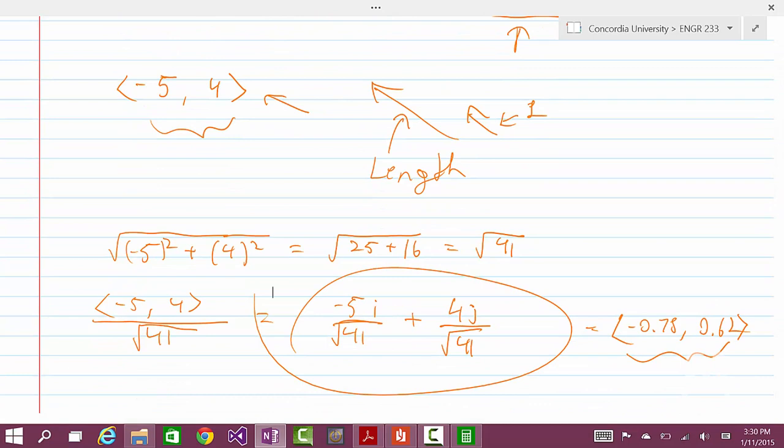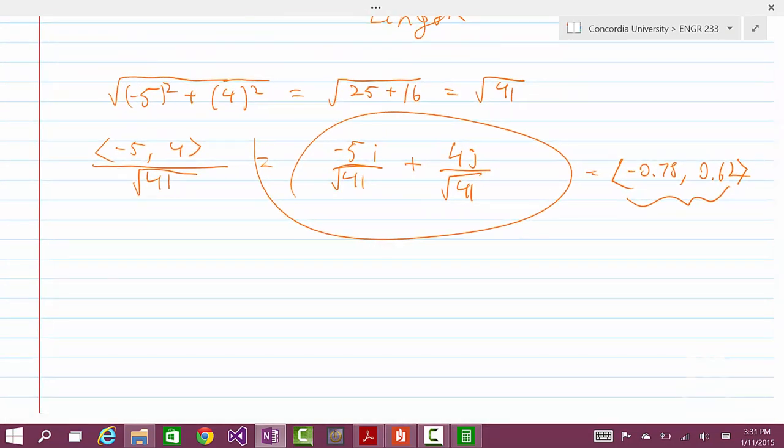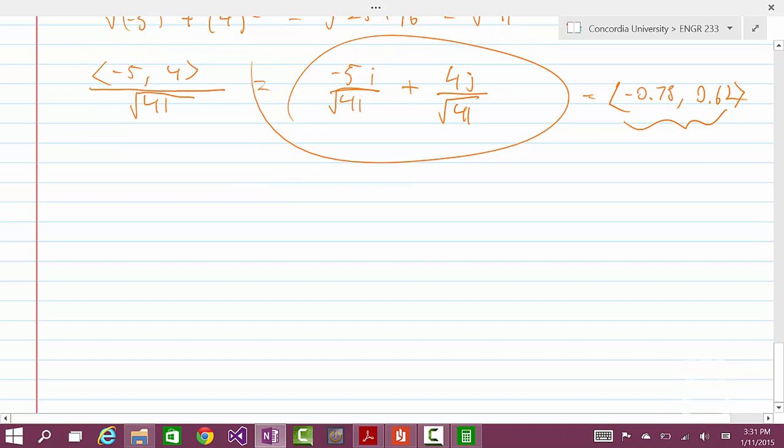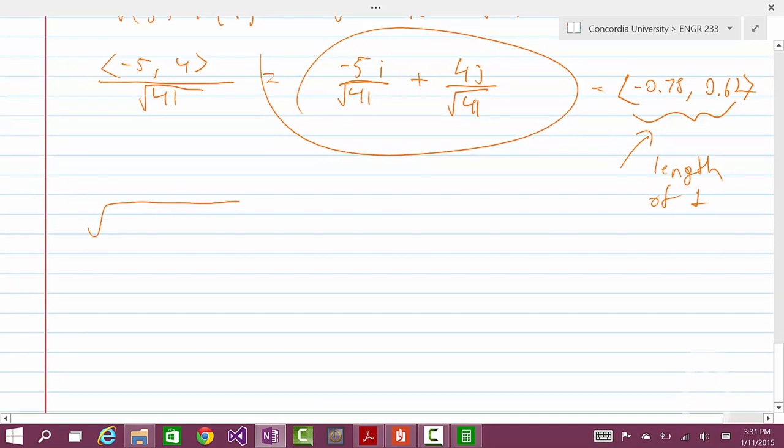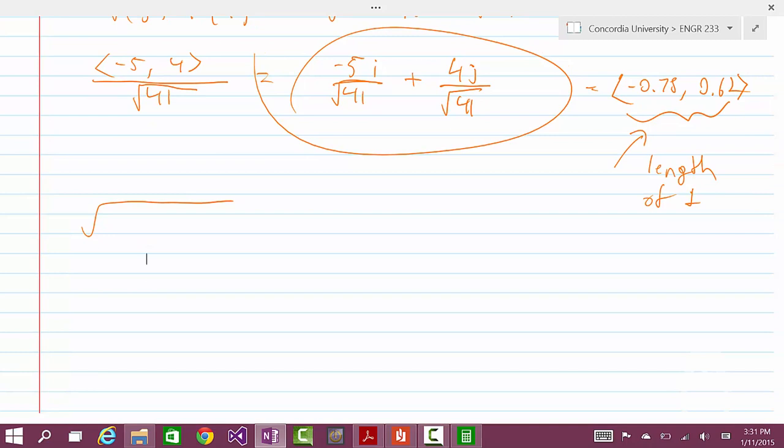Now again, the unit vector always has a magnitude of one and we could check that. To check that, let's do the distance formula again. So let's check that this has a length of one.